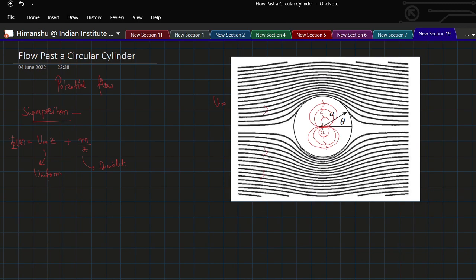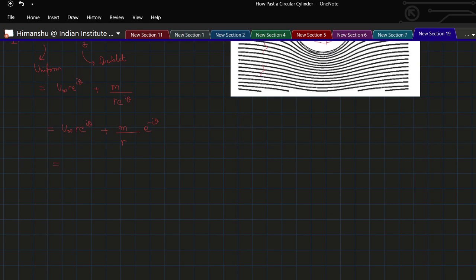Let the flow be in this direction. This can be written as cos theta plus i sine theta plus M over r times cos theta minus i sine theta.